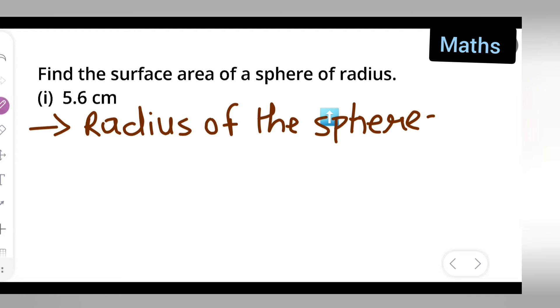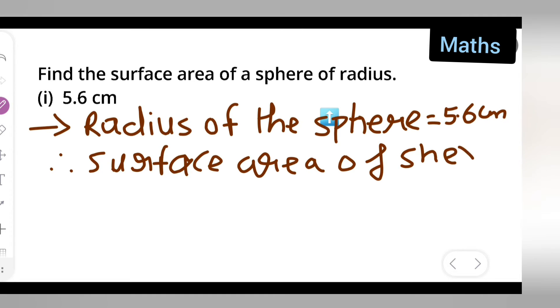You can write down 5.6 cm. Next, therefore what is the formula for the surface area of sphere? Surface area of sphere. What is the formula for the surface area of this sphere? It is equal to 4 pi r square.